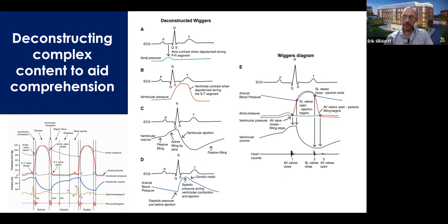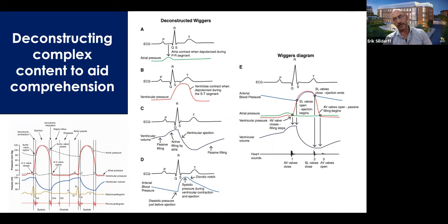When students understand that ventricular volume trace, they're really understanding the full sequence of events in the cardiac cycle. What I do all the time is put a ventricular volume trace on the exam and ask all kinds of questions — if you understand that trace, you understand where the valves are opening and closing, the difference between passive and active filling, how to calculate stroke volume, what EDV and ESV are. All kinds of content falls out of that one trace, and of course a key component of all this is that connection between the electrical and the mechanical.